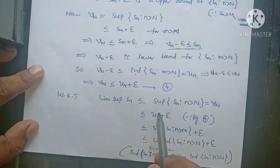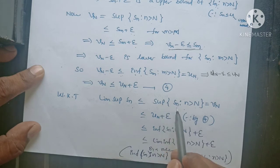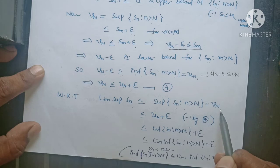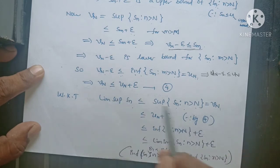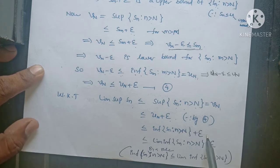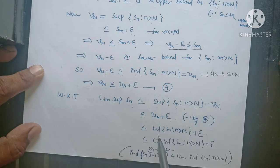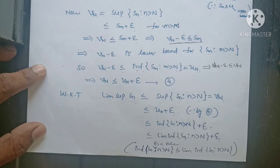Also, we know that limit superior of Sn is always less than or equal to the supremum of the sequence Sn for n greater than capital N, which by our notation is denoted by Vn. From equation 4, Vn is less than or equal to Un plus epsilon. Un means infimum of Sn for n greater than capital N, plus epsilon. We also have a rule: infimum of Sn for n greater than N is always less than or equal to limit infimum of a sequence Sn.